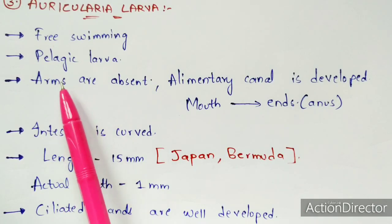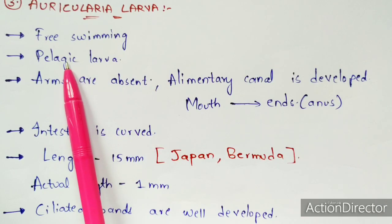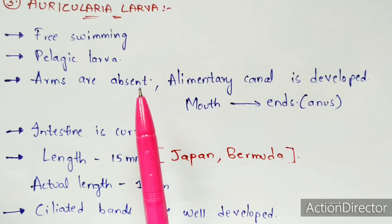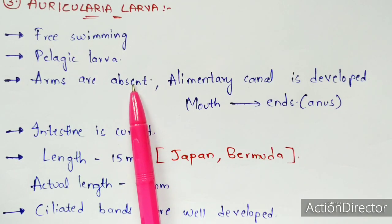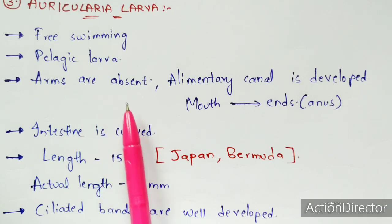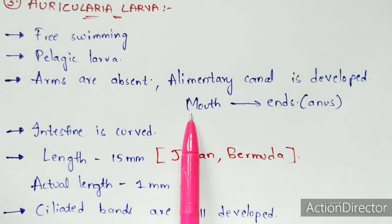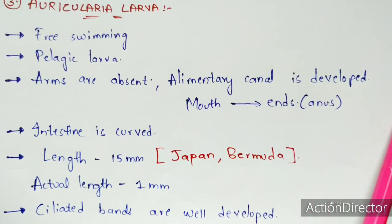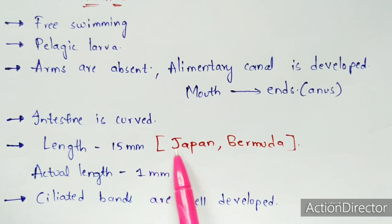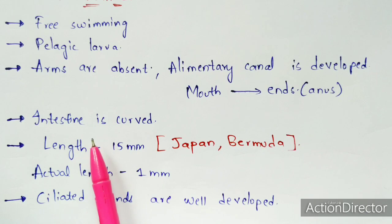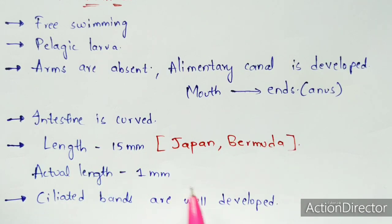The auricularia larva is a free-swimming, pelagic larva. The brachiolaria arms are absent in this stage. The alimentary canal is well developed, starting from the mouth and ending at the anus. The intestine is curved. The actual length is up to one millimeter, though in regions like Japan and Bermuda it can range up to 15 millimeters due to different environmental conditions. Ciliated bands are well developed.